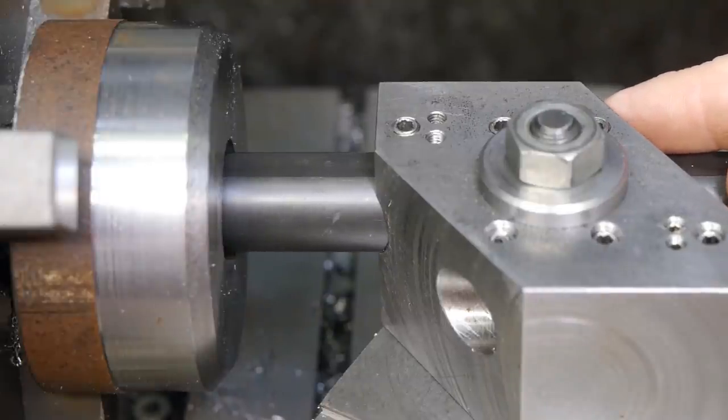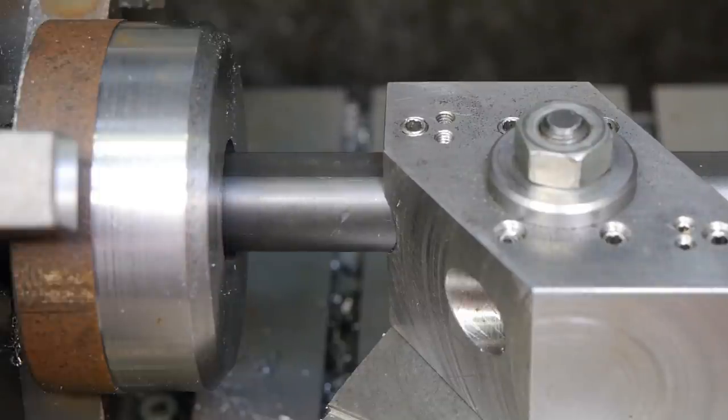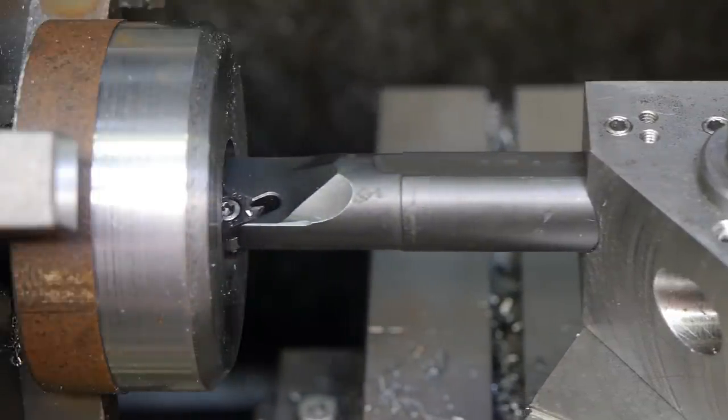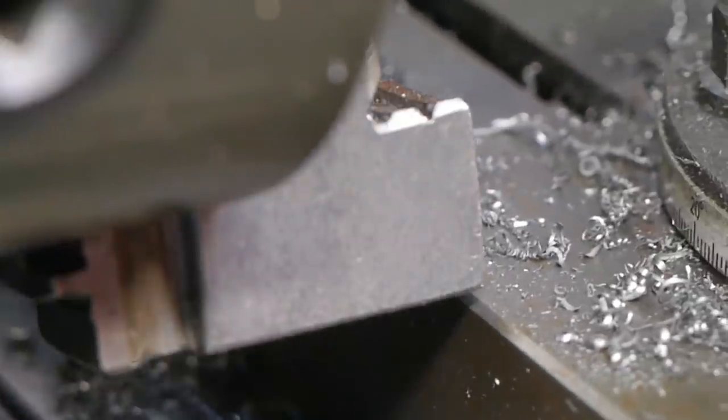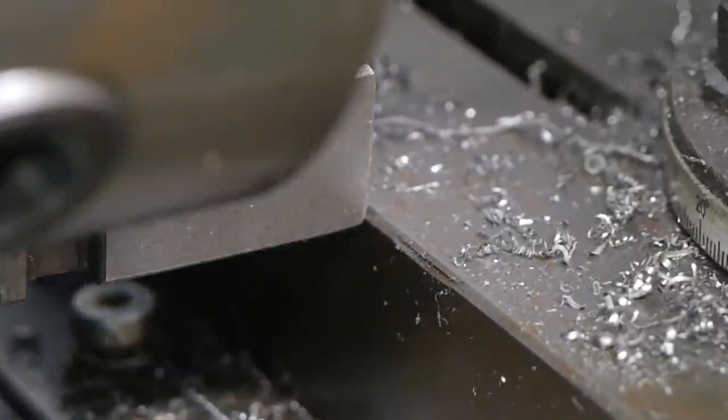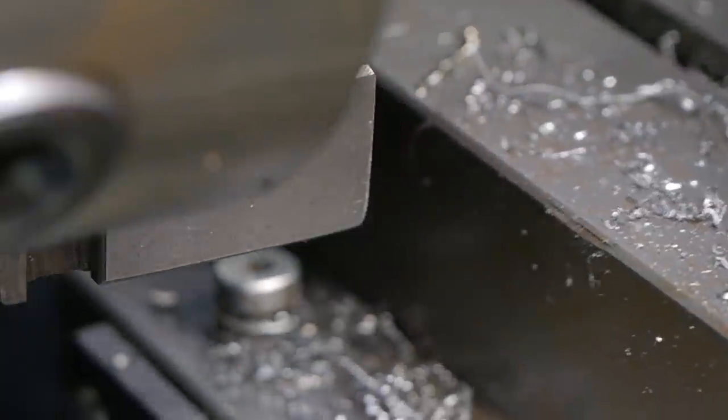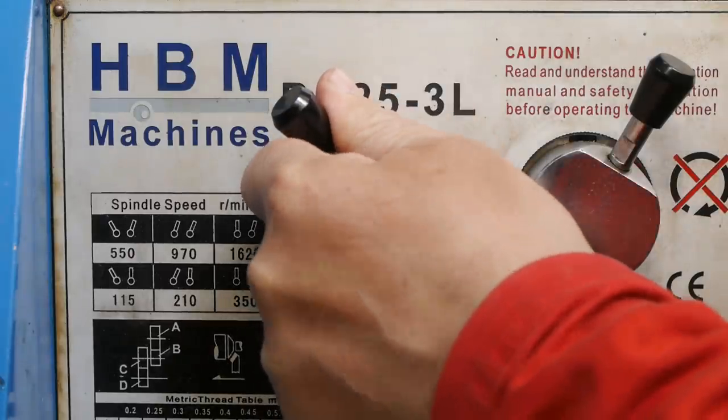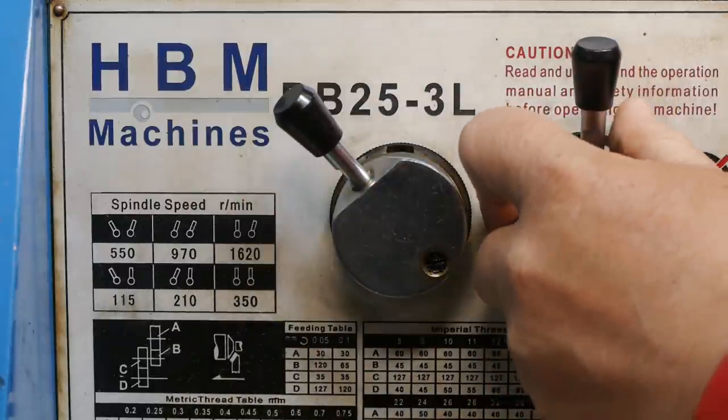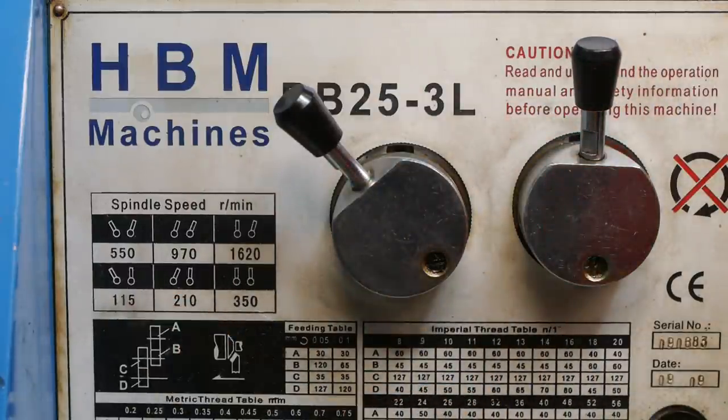Now I'm determining the amount of stick out needed. I know it's a lot but I don't want to run the carriage against the chuck jaws. Setting the lathe to the slowest speed, 115 RPM is still faster than I like.